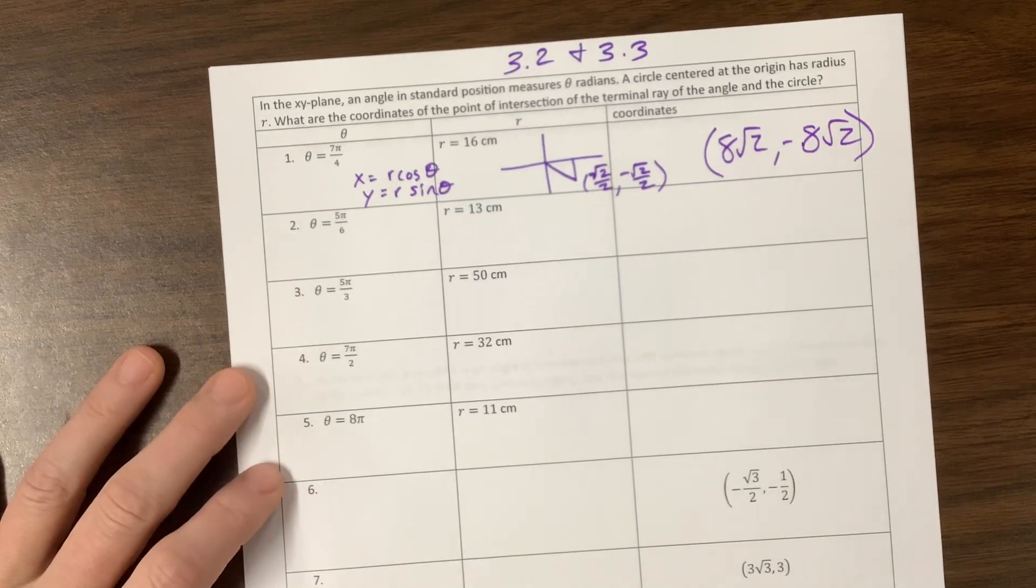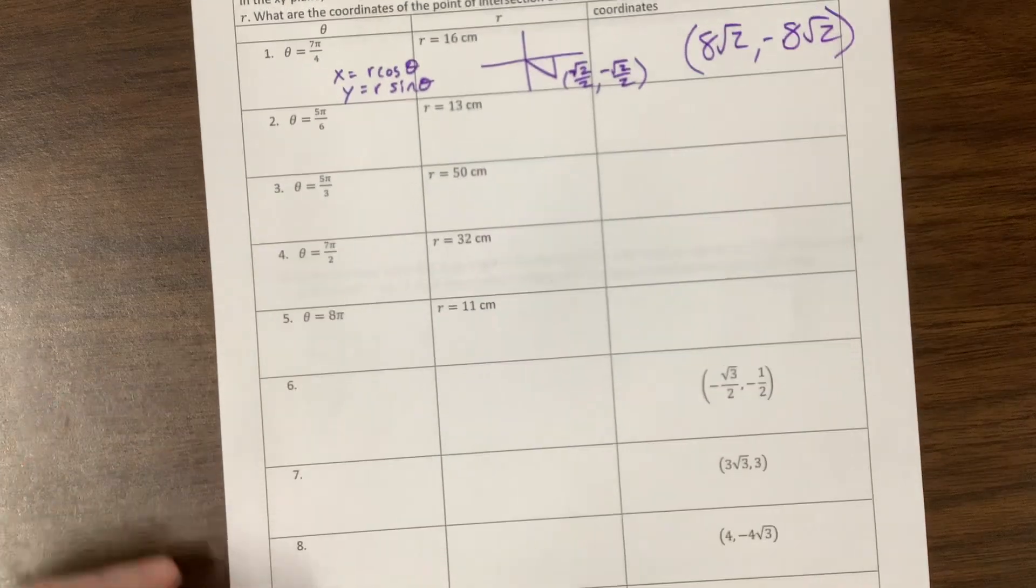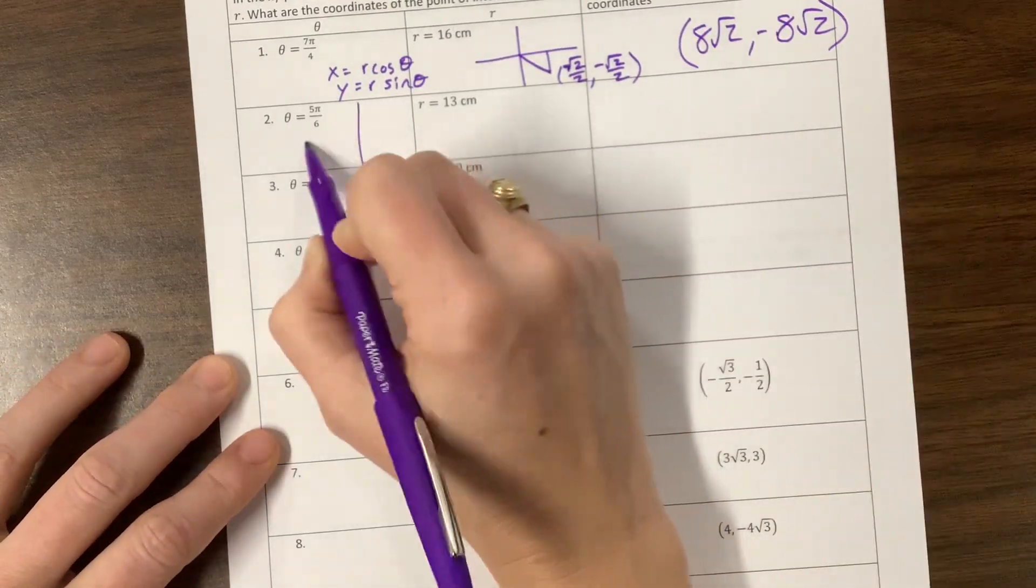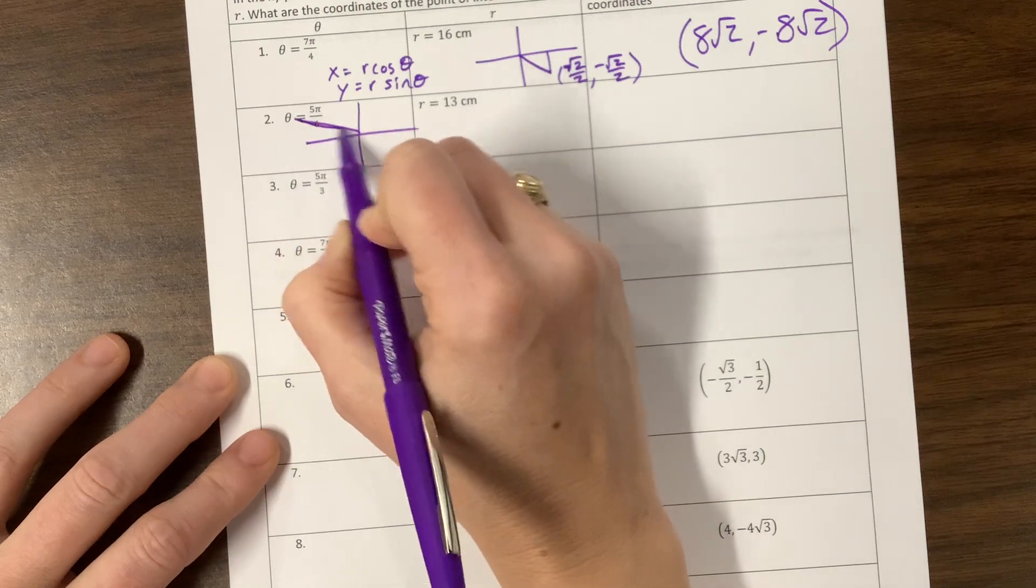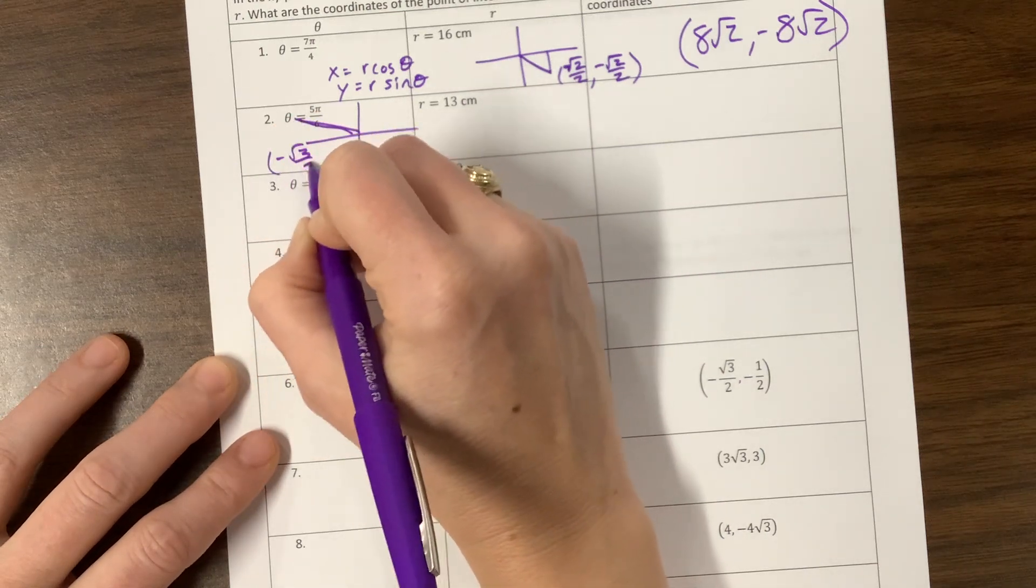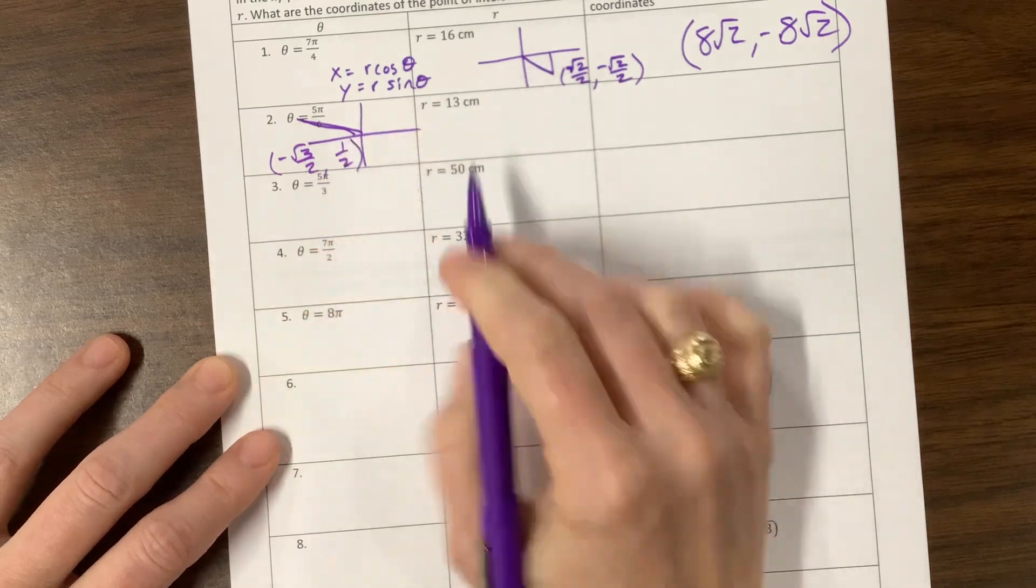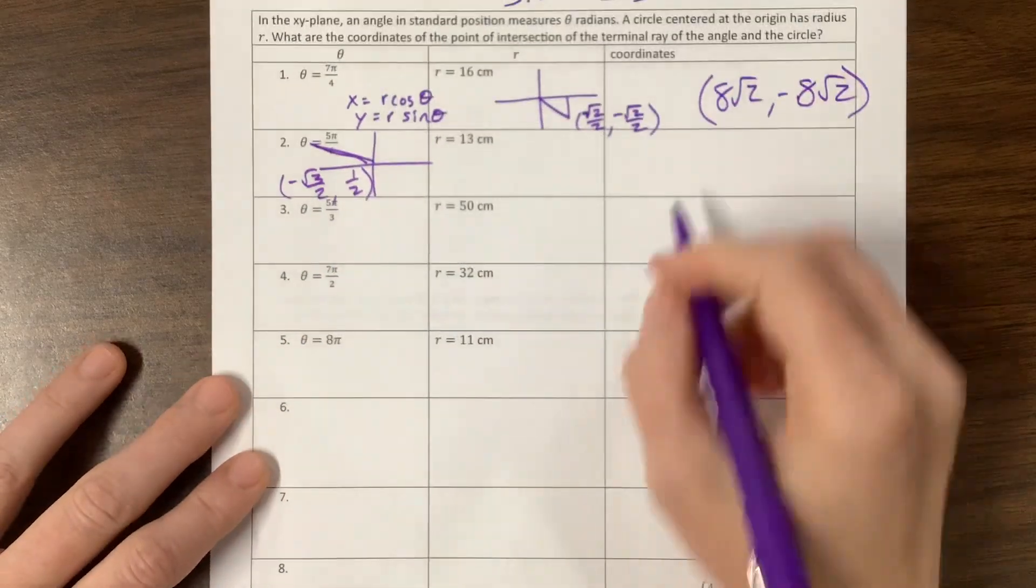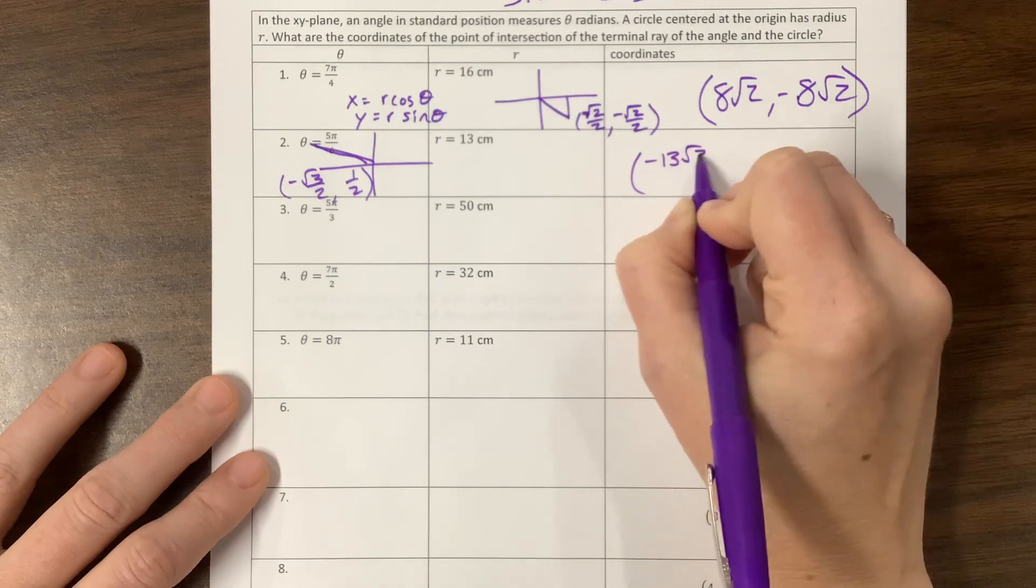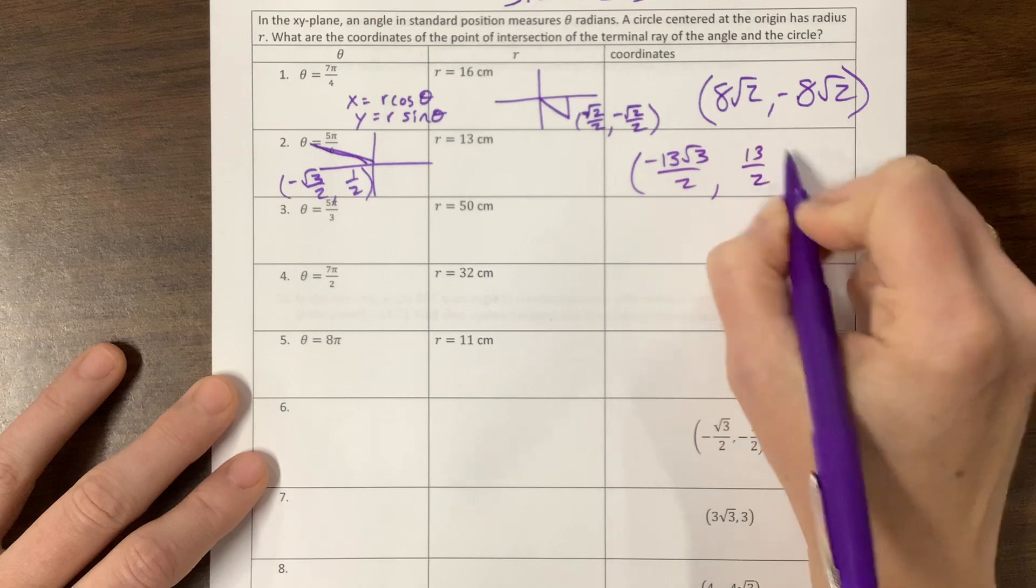This one, 5π/6 lives over here, and so its coordinates are negative √3/2 and positive 1/2. We have to multiply those by the radius, and nothing simplifies, so it's negative 13√3/2, 13/2.